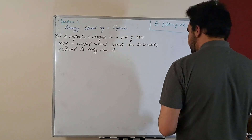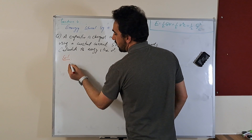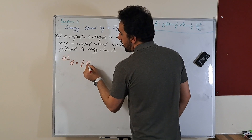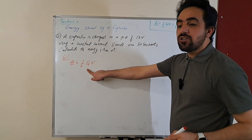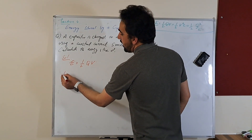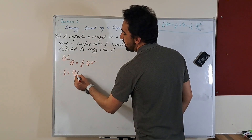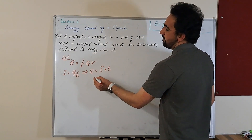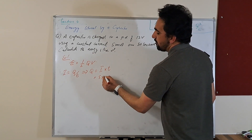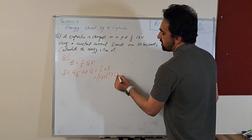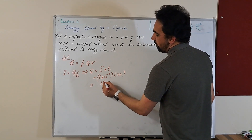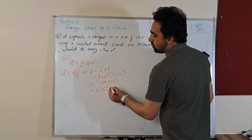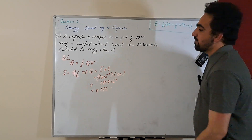Solution: energy stored in capacitor is equal to 1/2 QV. We have V but we don't have Q. We know current I is equal to Q divided by T, which implies that Q is equal to current I multiplied by time. So current is 5 milliamps, 5 into 10 to the power minus 3, and time is 30, which gives 150 into 10 to the power minus 3, or 0.15 coulomb charge. So we got Q.